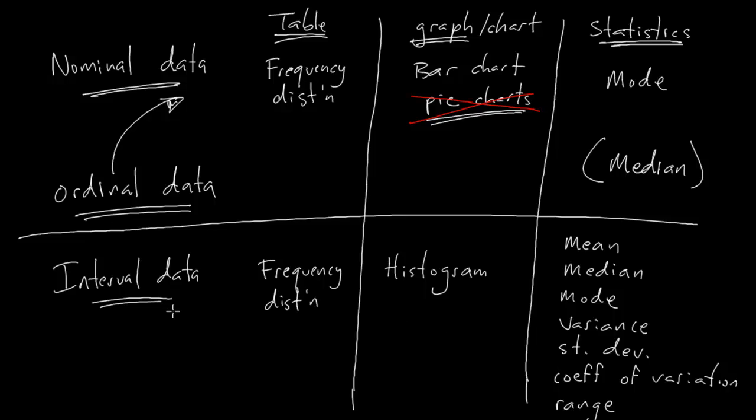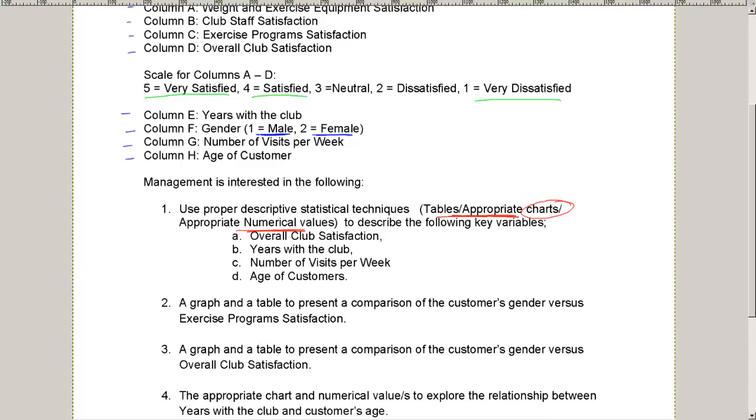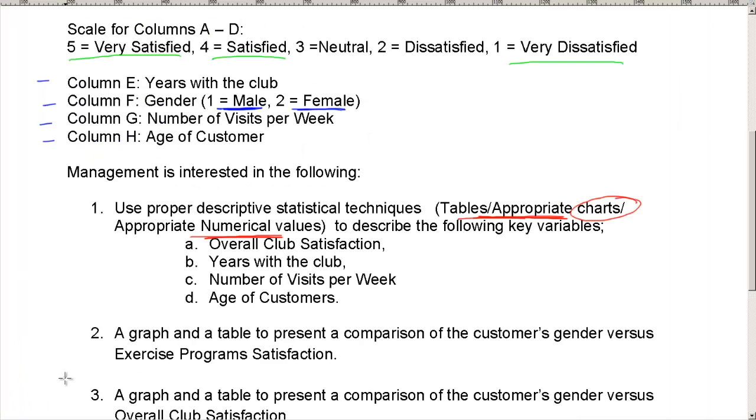Okay. So, we've got sort of a roadmap here as to how to approach different sorts of variables. And they did mention four different variables that we're supposed to be dealing with. So, let's have a look at these four different variables. And here they are, let's zoom in on these a little bit more. Overall club satisfaction.